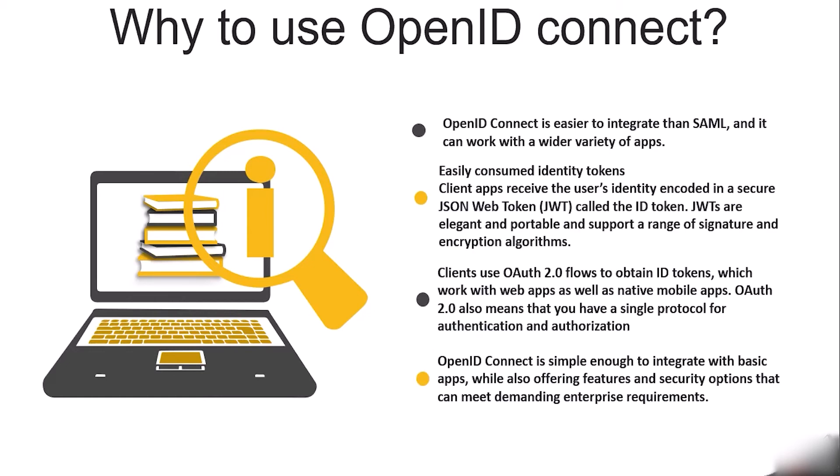OpenID Connect is easier to integrate than SAML and works with a wide variety of apps. Client apps receive user identity encoded in a secure JSON Web Token called the ID token. Tokens are elegant, portable, and support a range of signature and encryption algorithms. Clients use OAuth 2.0 flows to obtain ID tokens, which work with web apps as well as native mobile apps. This means a single protocol for both authentication and authorization, while also meeting demanding enterprise requirements.